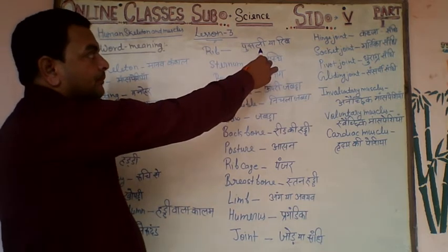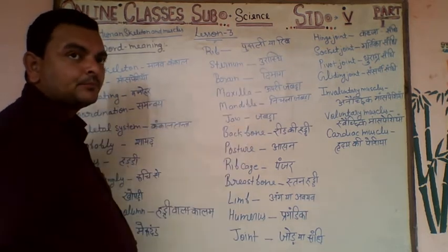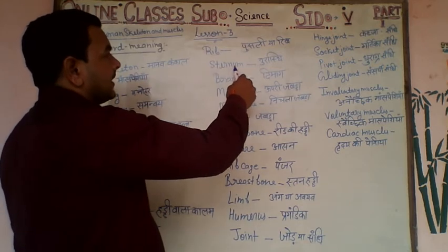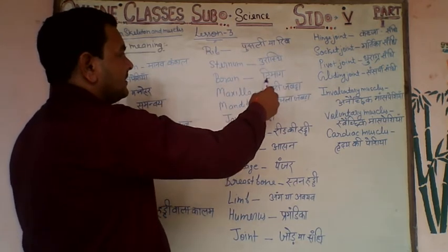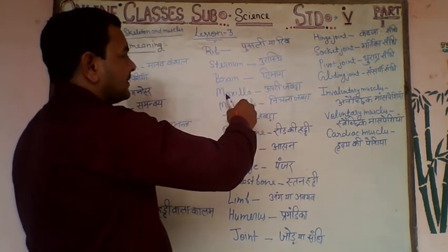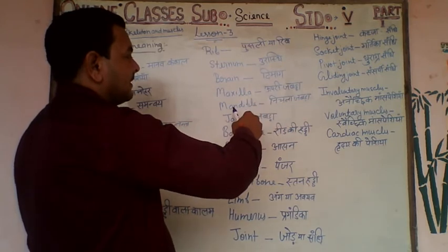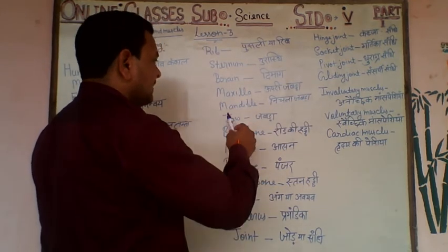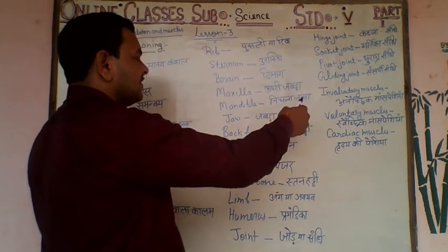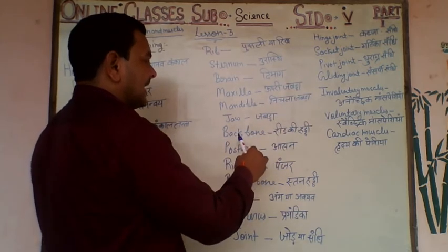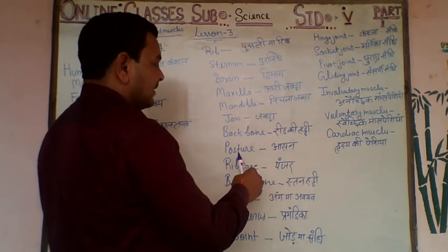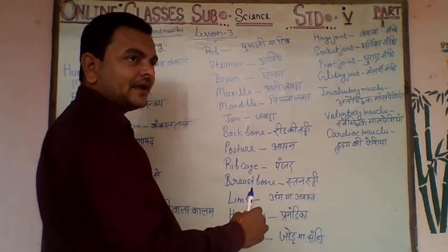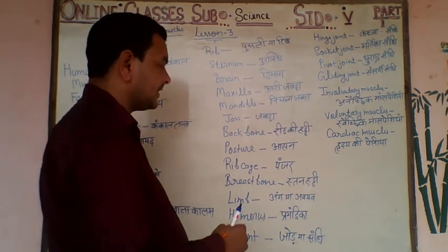Rib is Pusliya. Sternum is Urast. Brain is Dimar. Maxilla is Opari Jabla. Mandible is Nichila Jawaj Jabla — mandible means lower jaw, jaw means Jabla. Backbone means Rilki Haddi. Posture means Asan — the way we are sitting.